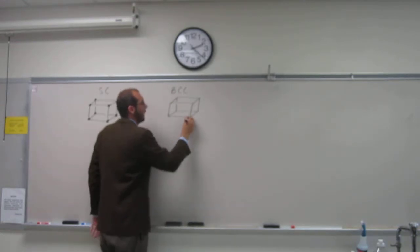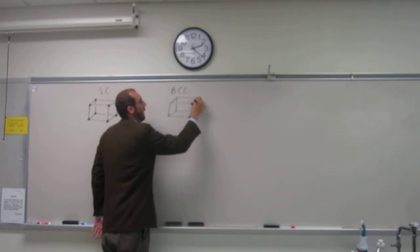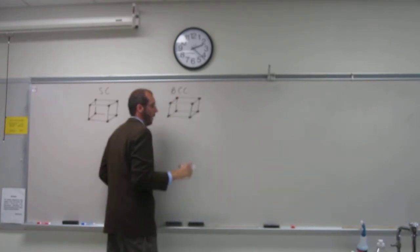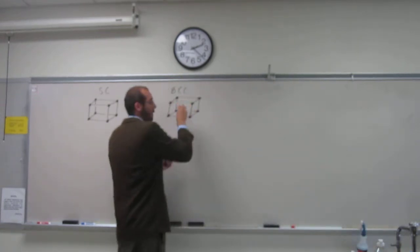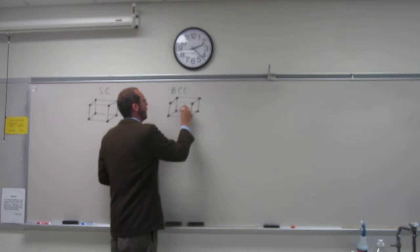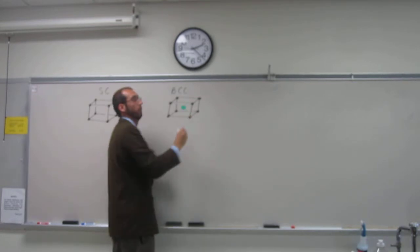The body-centered cubic has the same eight corner atoms as the simple cubic. But in the very middle, in the center of the body, there's a full atom.